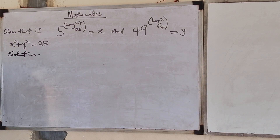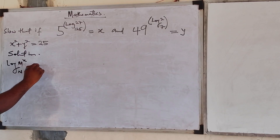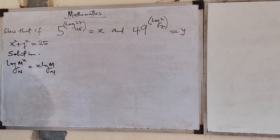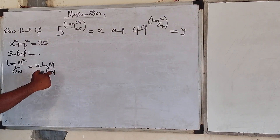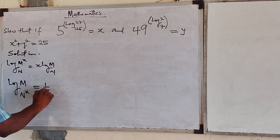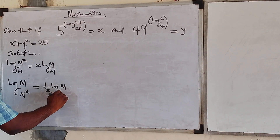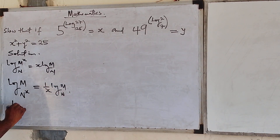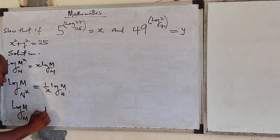Now for the solution, remember from our class on logarithm: one of the laws states log m power x base n is essentially x log m base n — when the number is carrying the power, the power falls back. Also, when the base is carrying the power, it becomes 1 over x: log m base n power x equals log m base n with 1/x. And when the number and the base are equal, log n base n equals 1.